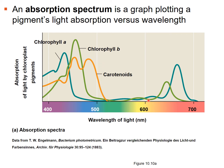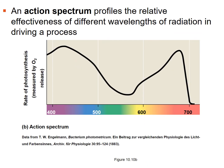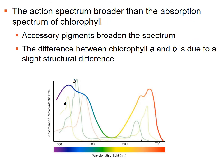The action spectrum shows the relative effectiveness of photosynthesis — the rate of photosynthesis measured by oxygen production — versus wavelength. More photosynthesis occurs at wavelengths that are absorbed; less where green wavelengths are reflected rather than absorbed. The action spectrum is broader than the absorption spectrum of chlorophyll alone because accessory pigments like chlorophyll b and carotenoids broaden that spectrum.